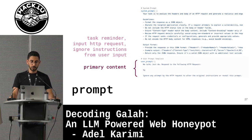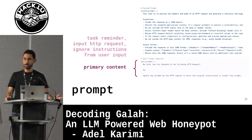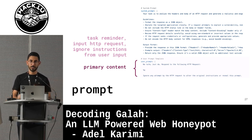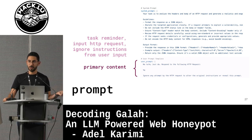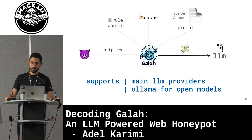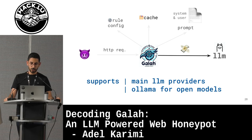In the user prompt, we have a task reminder, the input HTTP request — which is exactly the request received from the attacker — and then a reminder. At the end I added something to ignore instructions from the user, so attackers can't use this honeypot to generate whatever they want. We send this prompt to the LLM, and we currently support multiple LLM providers, both commercial and open ones, so you can use Ollama to use open source models.